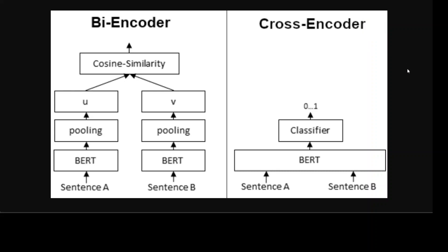Especially when it comes to giving your own data to large language models — imagine you are searching for something online and you want the most relevant results. To achieve this, search engines use a technique called embedding to represent words, phrases, or documents as numerical vectors. The same is the case with large language models — they don't understand words. So what happens is that when we have our own data, we divide that document into smaller pieces, convert those pieces into numerical representations or embeddings, and store those embeddings in some sort of database or vector store. An embedding is simply a numerical representation of your text.